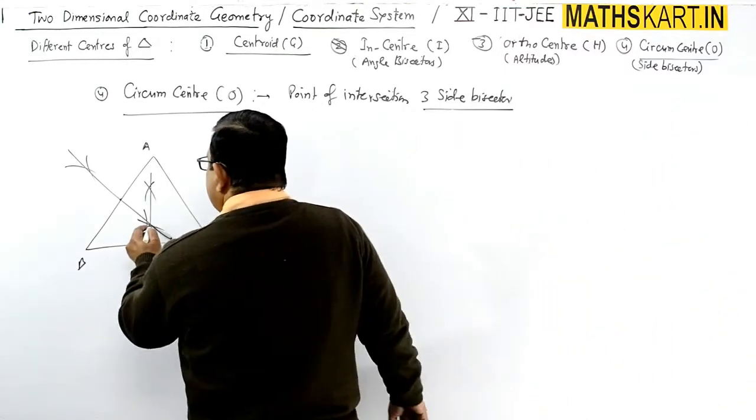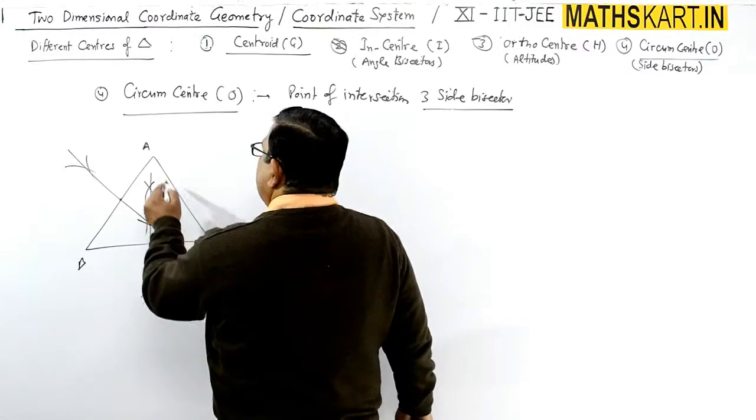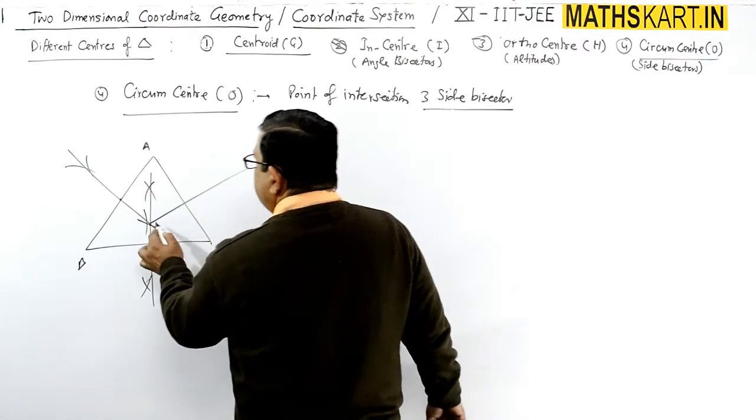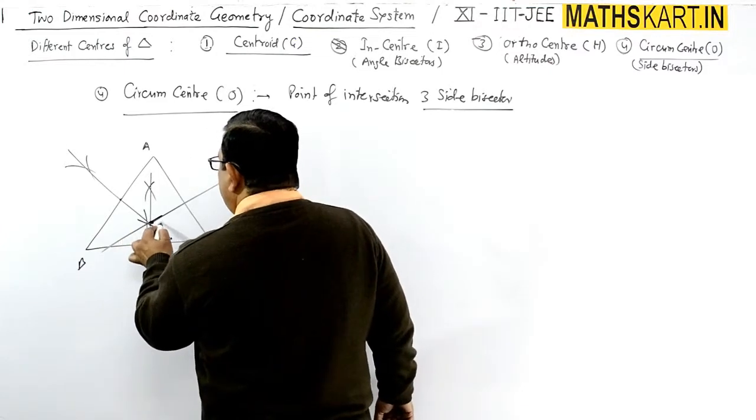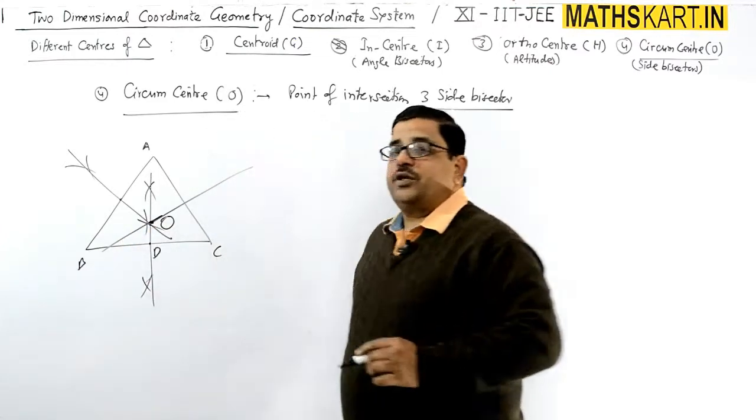The side bisectors intersect here, but the third side bisector will also be involved. The side bisectors intersect at this point, that point is known as O.